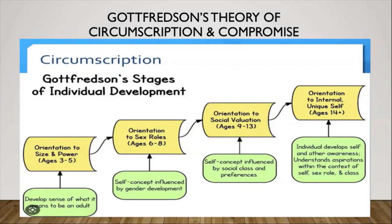Kids in general may view CEOs or presidents of companies more highly than they view a janitor, a lunch aide, or someone with a lower social status. They may want to be a president or a CEO and may not want to be a garbage collector or a lunch aide or a janitor. The fourth and final stage of this theory is orientation of the internal unique self, which is supposed to occur at or after the age of 14. During this stage, the person starts to look for jobs that match who they feel they are and eliminates jobs that don't seem to fit who they are or who they want to be.